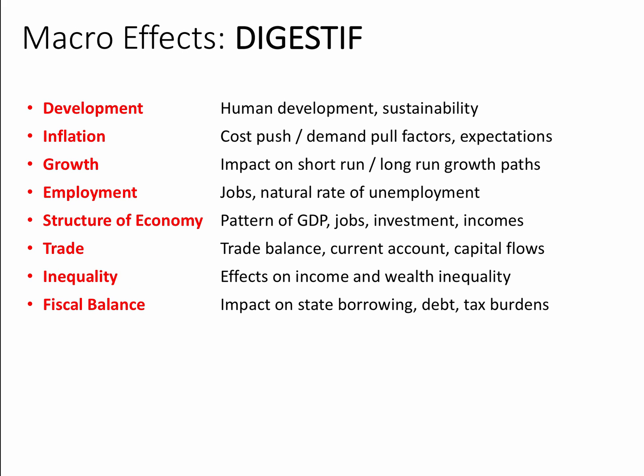On the macro side, we have a mnemonic called DIGESTIVE. This can be quite hard to swallow at times, but you might want to take, for example, the impact on development, inflation, growth, jobs, structure of the economy, trade — which is important — inequality, and of course the state of the government's fiscal balances. We're going to draw on some of these in our answer to this question.